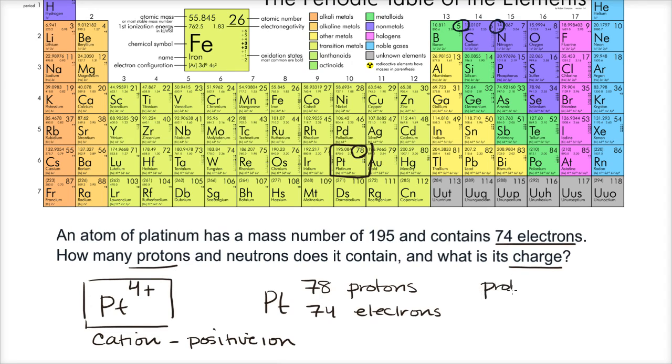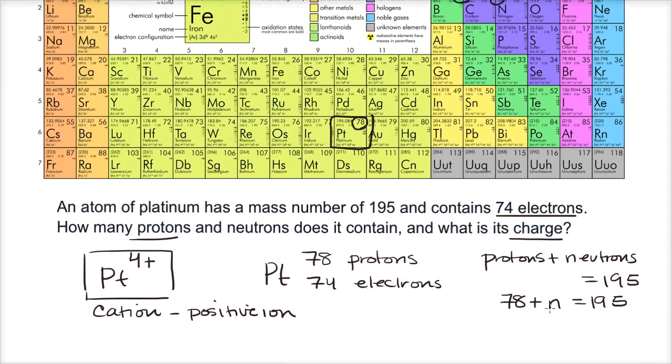Well, protons plus neutrons is going to be equal to our mass number. It's going to be equal to 195. So we have 78 protons plus, I'll say n for neutrons, is equal to 195. Subtract 78 from both sides, and what do you get? The number of neutrons is equal to, if I subtract 70, I'll get 125 minus eight, I have 117 neutrons. So 117 neutrons.